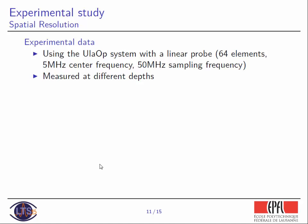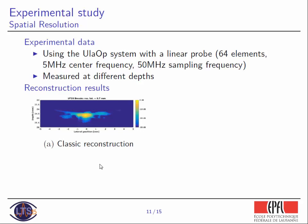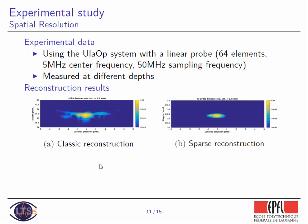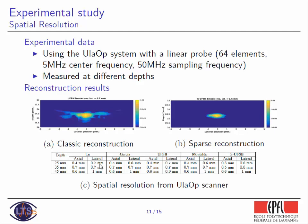What about resolution? To measure resolution, we used the same probe setup — 64 elements, five megahertz center frequency, 50 megahertz sampling frequency. We measured resolution at different depths, placing a wire at 25 millimeters, 35 millimeters, and 45 millimeters, then applied the same reconstruction methods. With our method, we clean the image somewhat, but when we calculate the resolution, we did not see a real increase — the main lobe remains the same as with other methods. Why? Because we promote sparsity not in a Dirac basis, which would promote point-like spikes, but in a wavelet-type basis that promotes more structure.